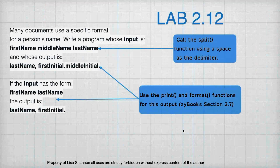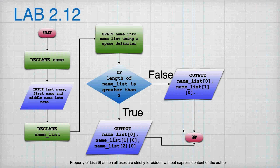We'll go over it here anyway so we know how to read these in case we need to. Lab 2.12 is about name formatting — many documents use a specific format for a person's name. The input is going to be one of two things: first name, middle name, and last name, or last name, first initial, and middle initial. If the input has the form first name, last name, then the output is last name, first initial.